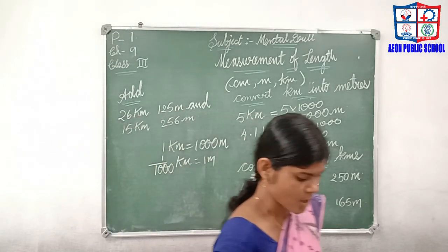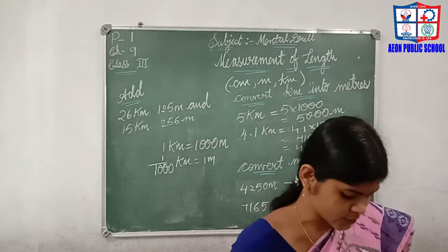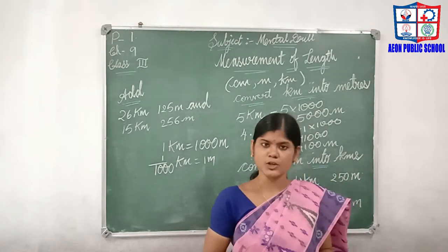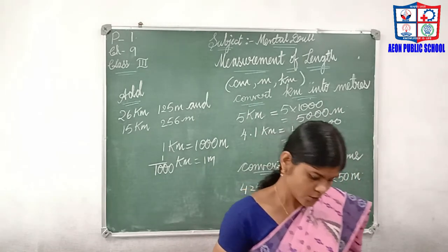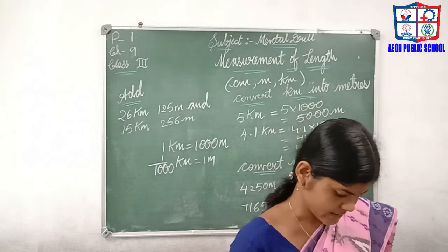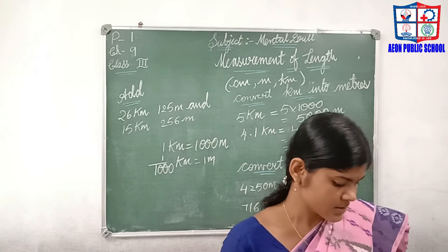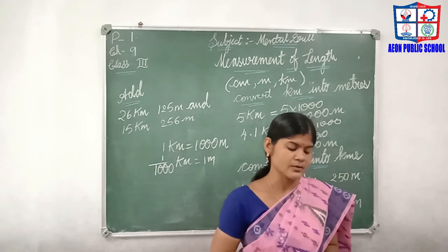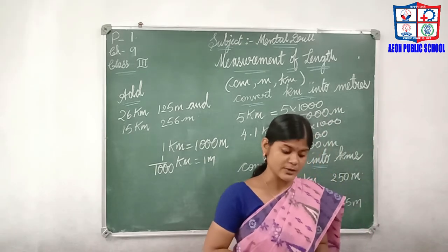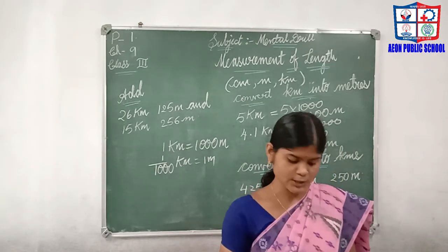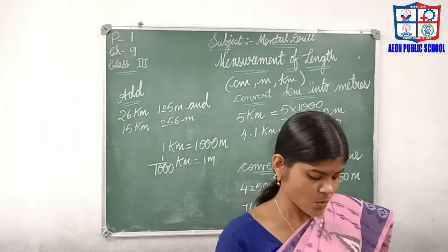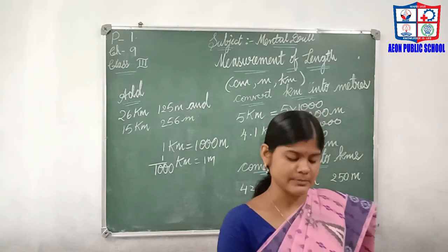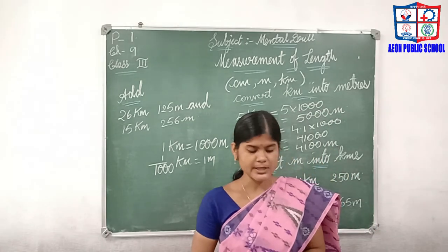Continuing: 1200 meters equals 1 kilometer and 200 meters. And 6105 meters equals 6 kilometers and 105 meters. The remaining questions follow the same process — divide by 1000 to get kilometers and meters.